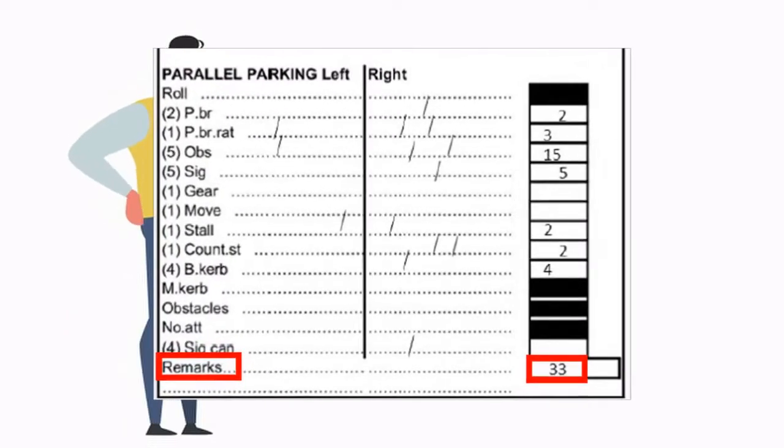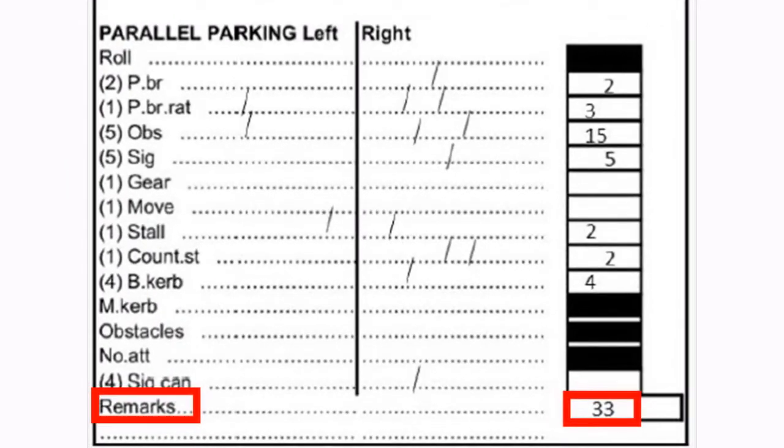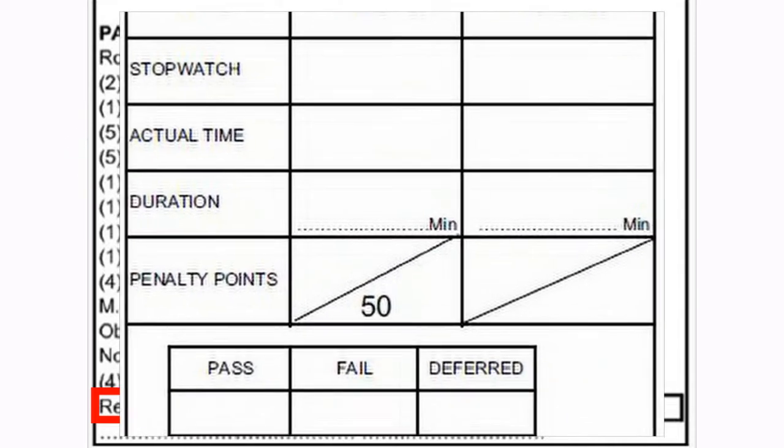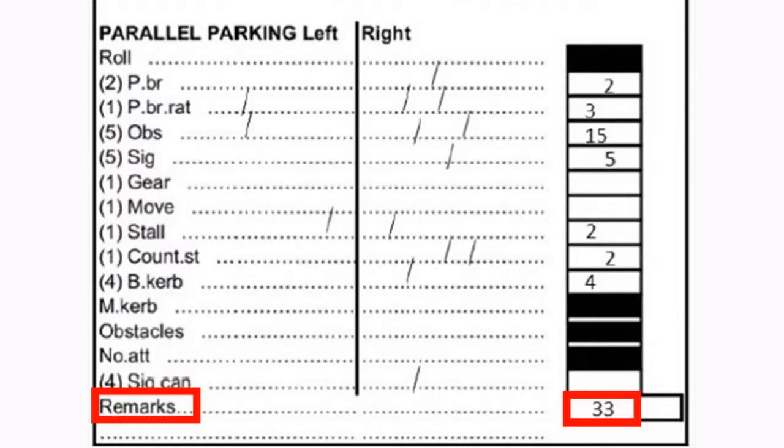Total penalty points scored at the parallel parking: 33 points. Although the trainee did not fail at the parallel parking and only took one attempt to parallel park the vehicle, the score is too high for one obstacle in the yard. The trainee can easily exceed the maximum 50 points allowed for the K53 yard test. You do not want to throw points away as every point counts.